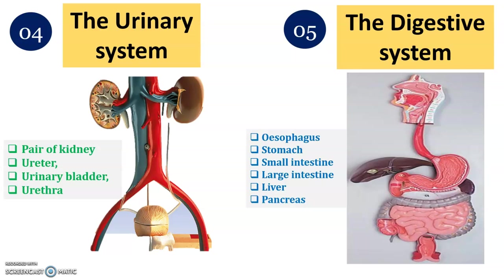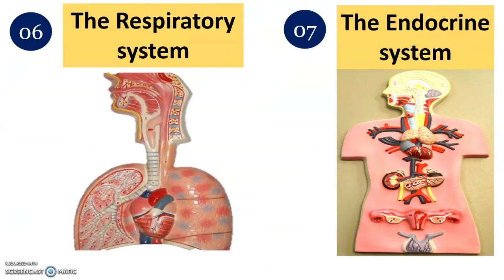The digestive system model includes the stomach, small intestine, large intestine, liver, and pancreas. Identify and label each part of the digestive system from the model available in your lab. The respiratory system starts from the nose, pharynx, larynx, trachea, bronchi, alveoli, and the lungs. These structures form the complete pathway of the respiratory system.